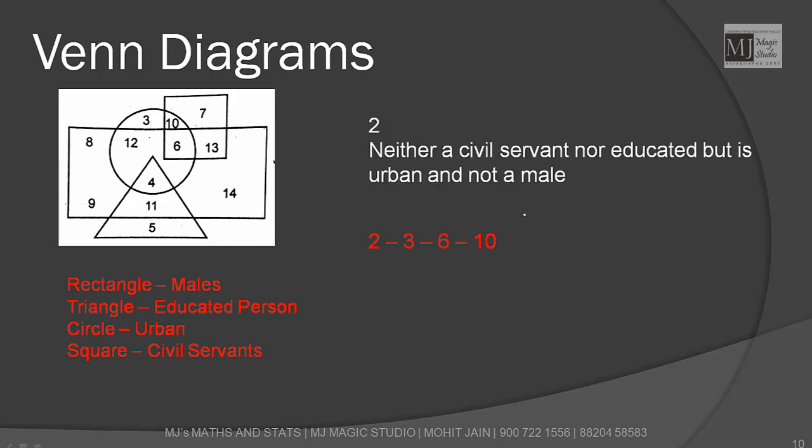Question two: neither a civil servant minus S, nor educated, but is urban plus C and not a male minus R. I need C - S - R. That means I am only looking for only C. Which portion represents only C? Part number 3.